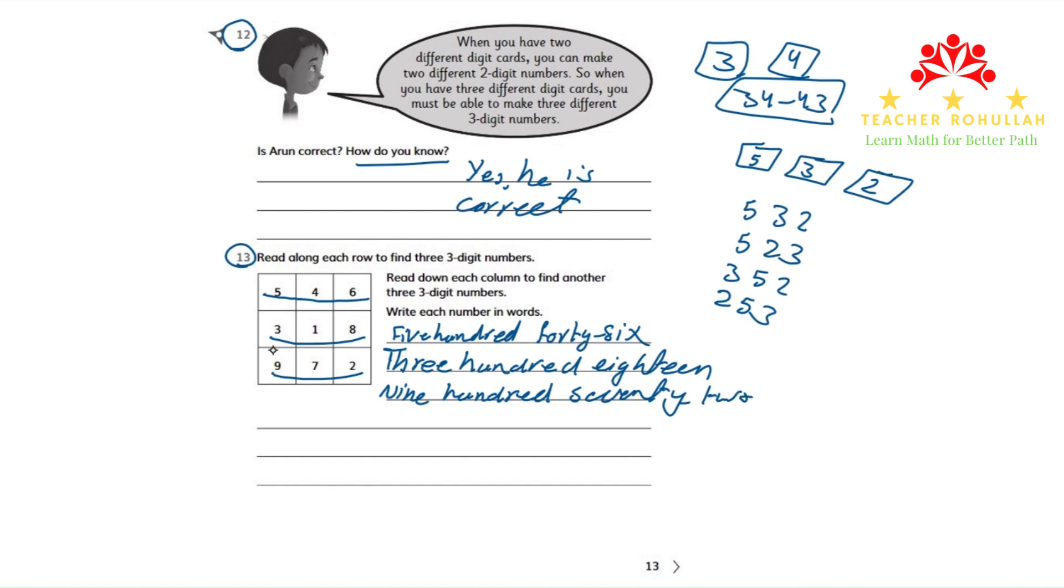Now we have to read down each column. In this column, we have 539, and the second column, we have 417, and the third column, we have 682.